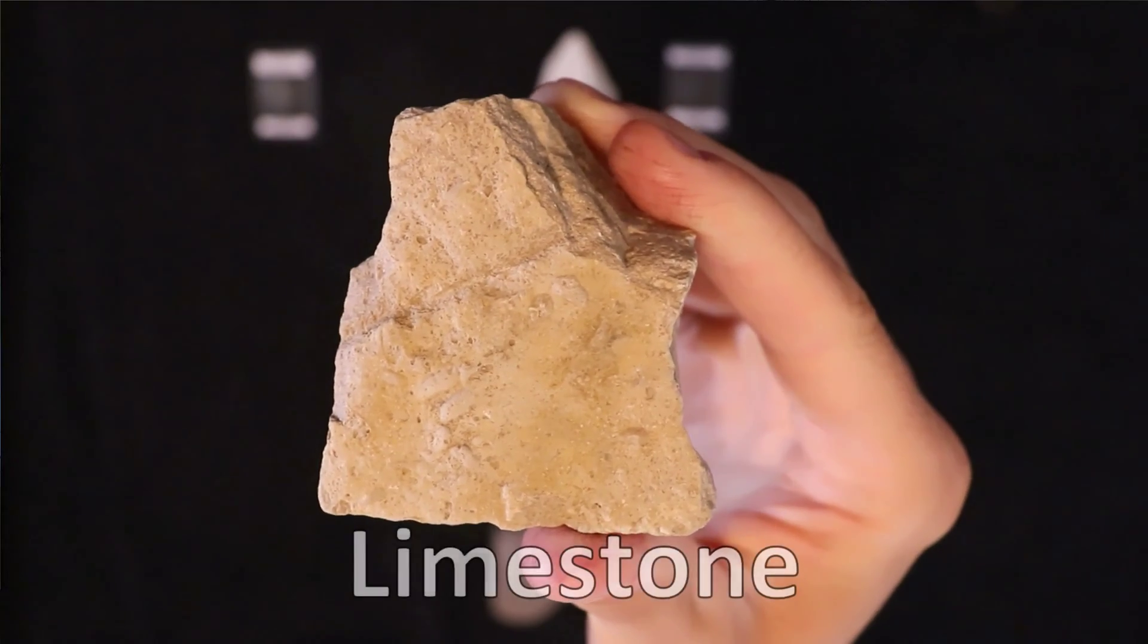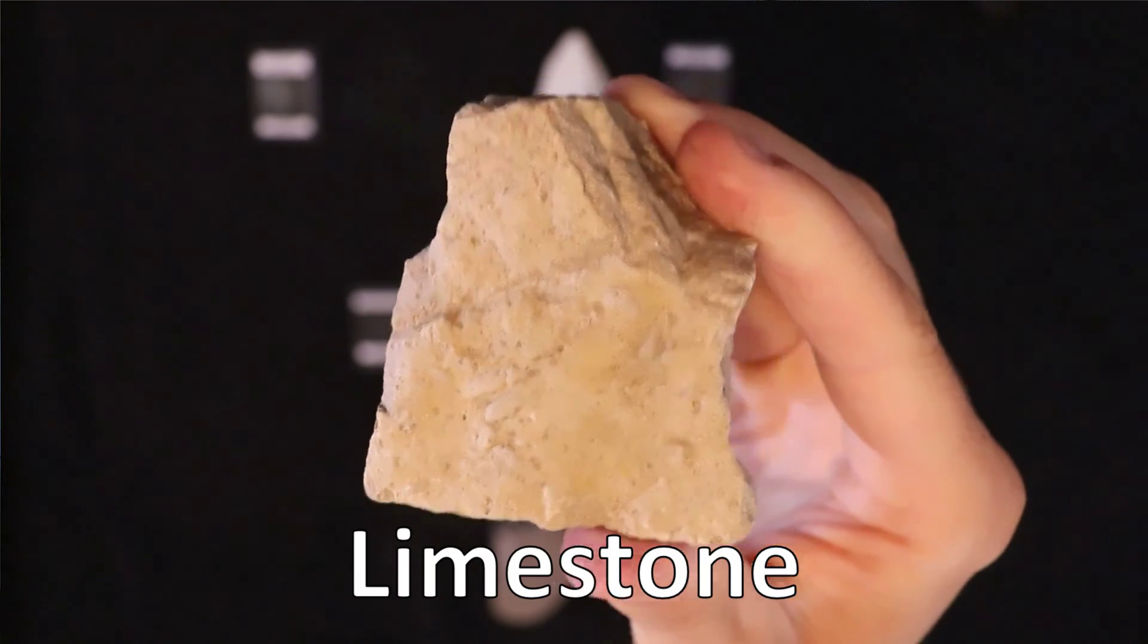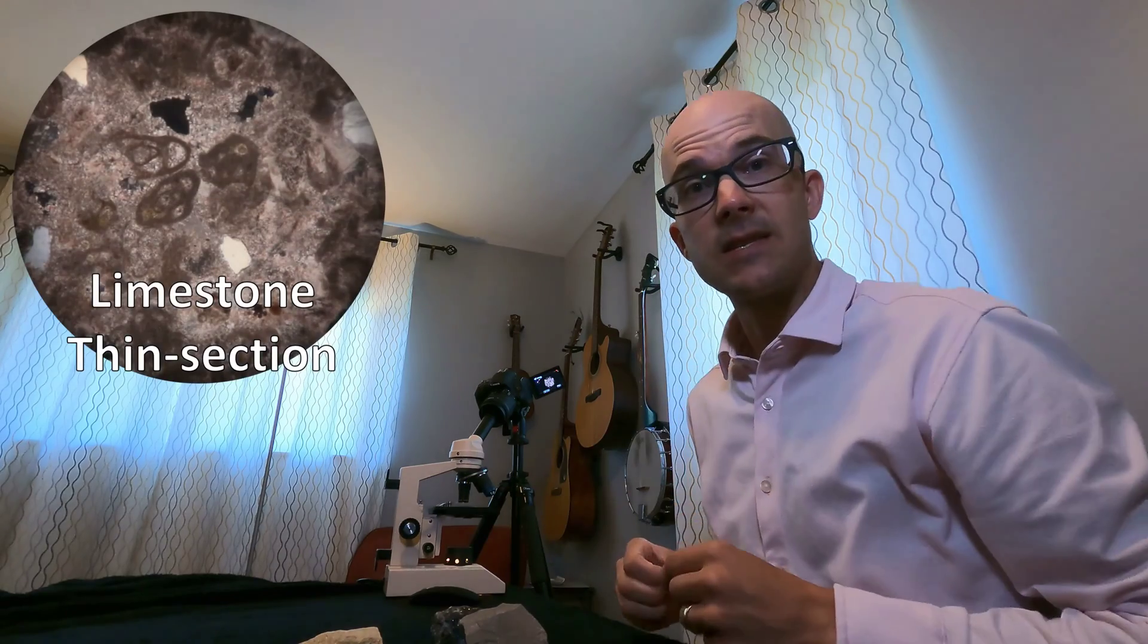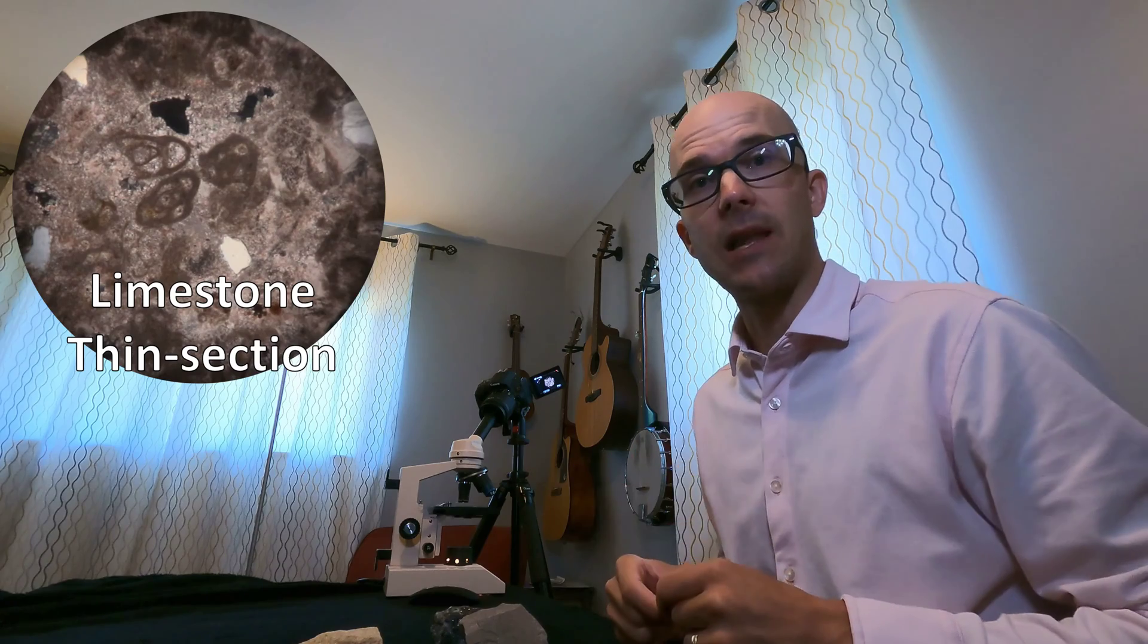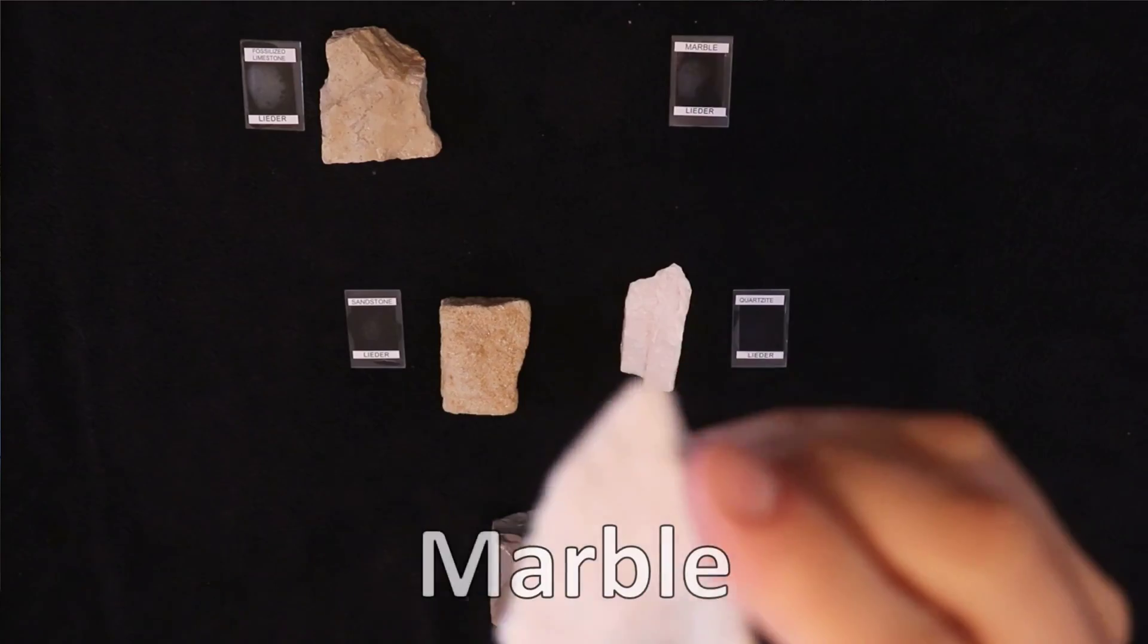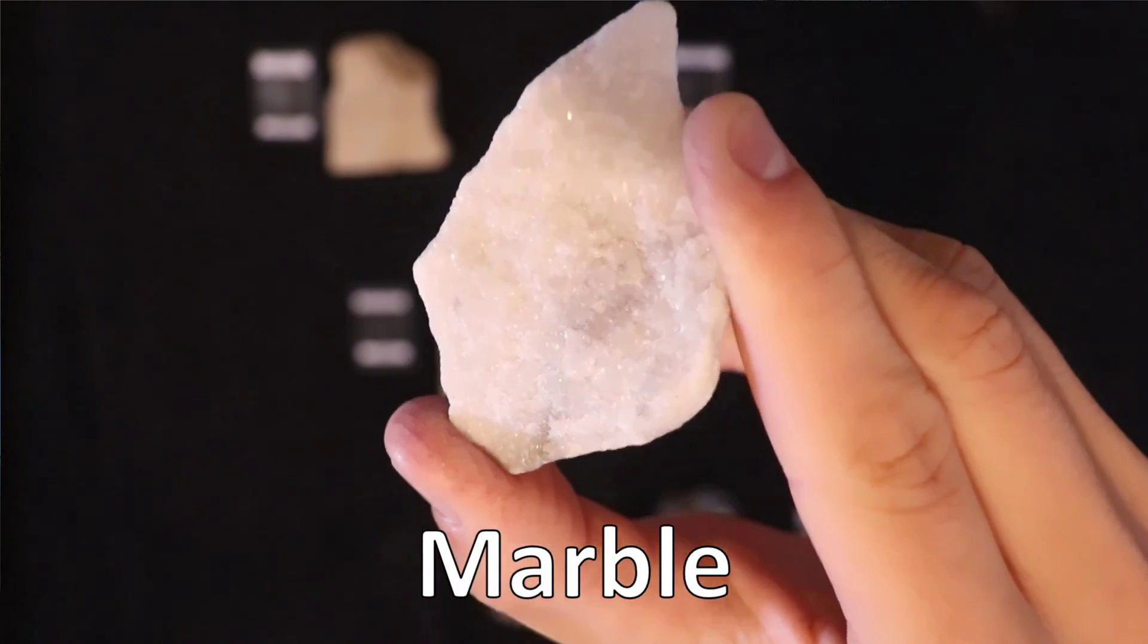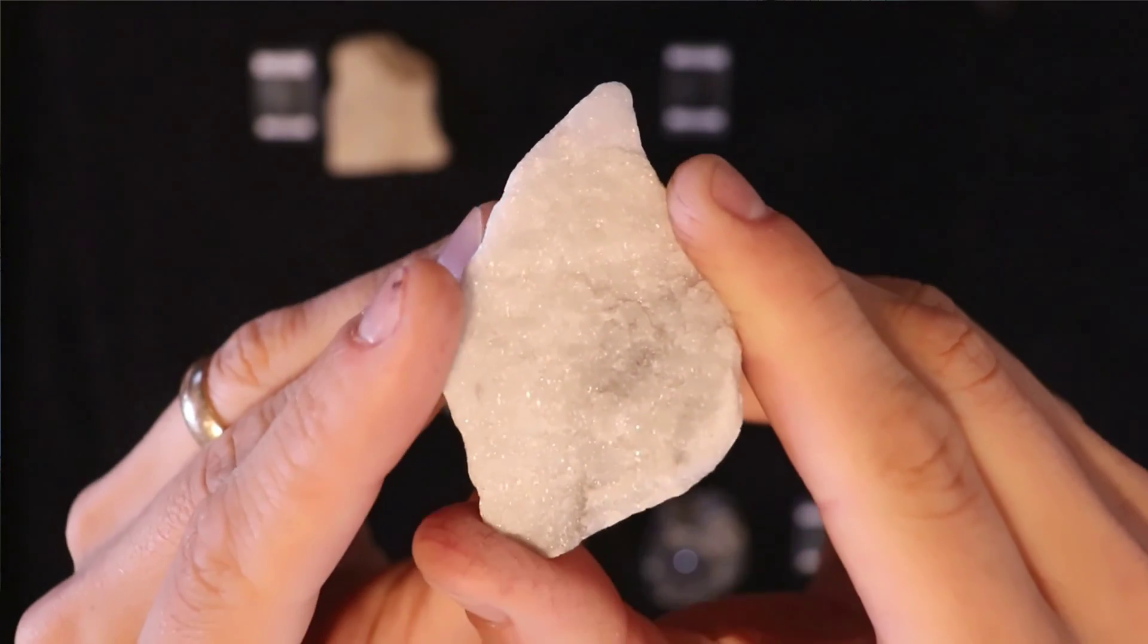Let me give you an example of a metamorphic rock and its protolith. This is limestone. It's a sedimentary rock formed from the calcium carbonate shells of sea creatures such as plankton or coral. And here is its thin section. You can see all the little shells of the sea creatures that made up this limestone. You can turn limestone into marble. Marble is limestone that has been heated and squeezed. This heat and pressure recrystallized the calcium carbonate into crystals. And you end up with marble.